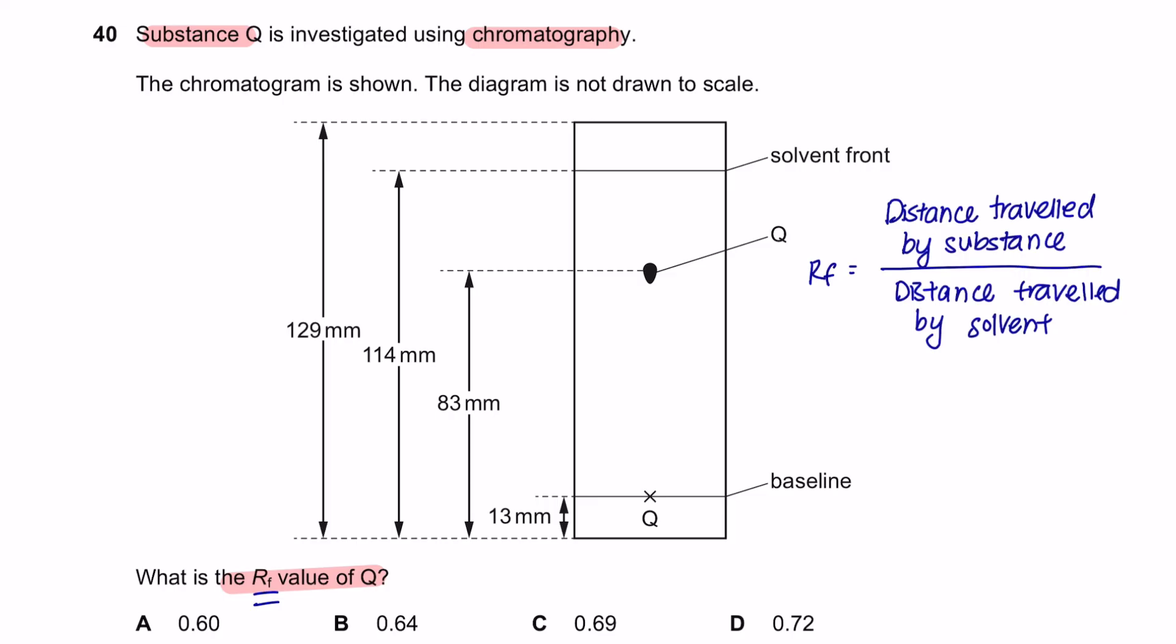So this is the solvent front. And as you can see, we will take the measurement from the baseline. So from here to here will be 114 mm take away 13 mm. That will be 101 mm. So the distance traveled by the solvent is 101 mm.